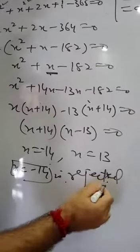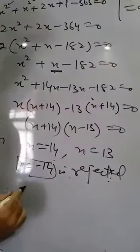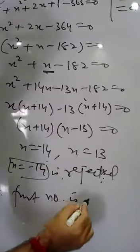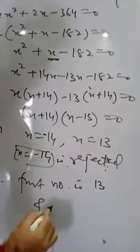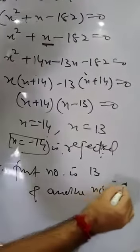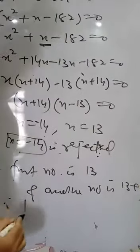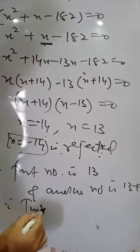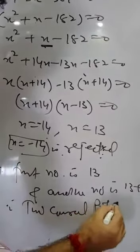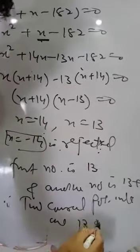We need positive integers, so x equals minus 14 is rejected. Therefore the first number is 13 and the other number is 13 plus 1, that is 14. Therefore, the two consecutive positive integers are 13 and 14.